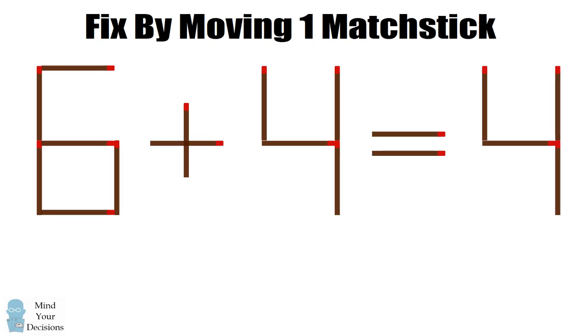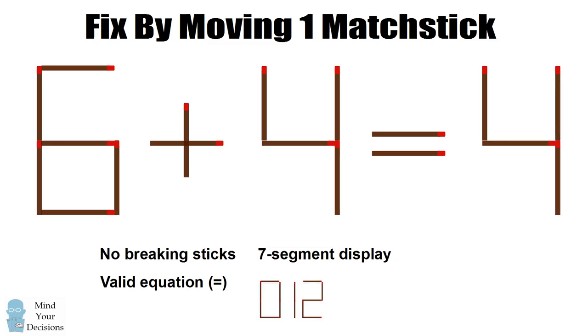In these puzzles, there are typically some ground rules. You cannot break any of the sticks. You must make a valid equation with an equal sign. And in this particular problem, you should restrict yourself to numbers that you can display using 7 segments. These are the block numbers from 0 to 9.